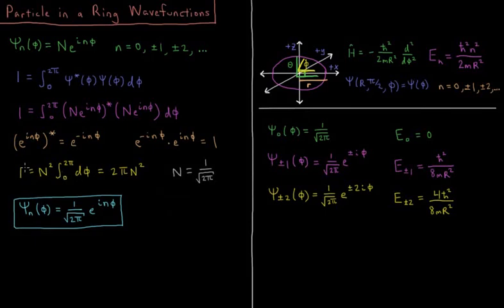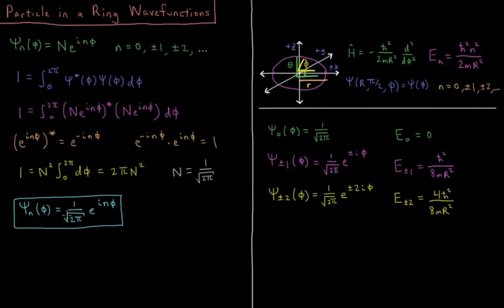So this integral gives us 1 equals 2 pi times N squared. Therefore the normalization constant N equals 1 over the square root of 2 pi. Our particle-in-a-ring wave functions are: psi sub n of phi equals 1 over the square root of 2 pi times e to the i n phi.